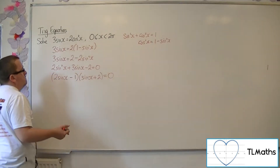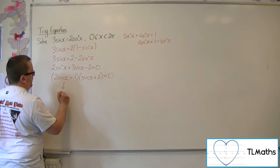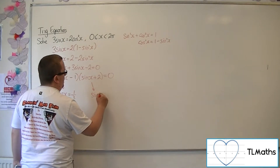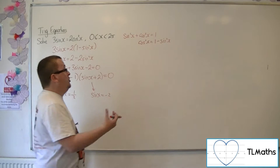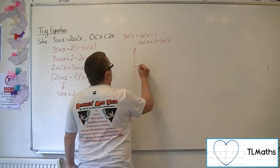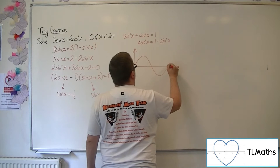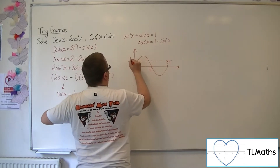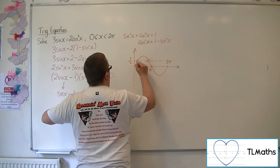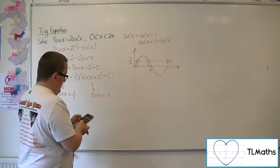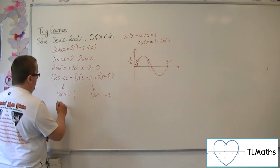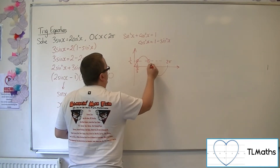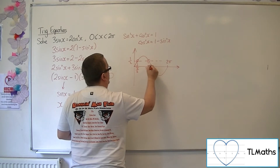Now either this bracket is 0, so sine x is 1 half, or that bracket is 0, so sine x is minus 2. If we sketch sine between 0 and 2 pi, then 1 half will intersect the curve twice, so we'll expect two solutions here. Inverse sine of 1 half in radians is pi over 6 for the first solution, and the second solution is pi over 6 away from pi, so that's 5 pi over 6.